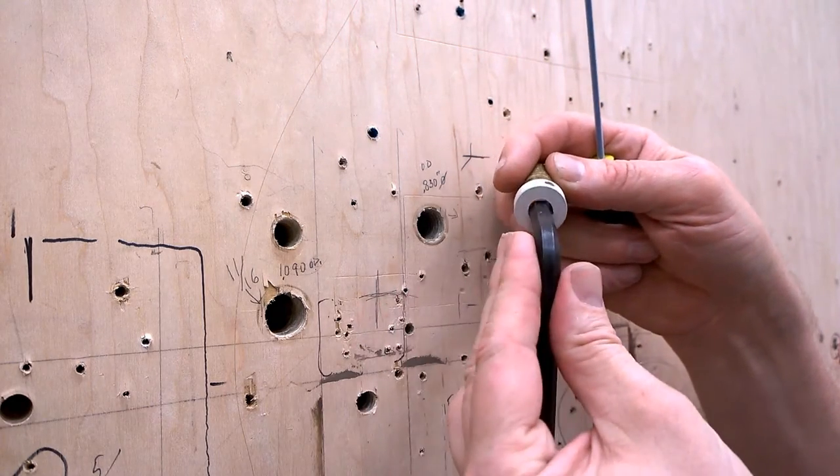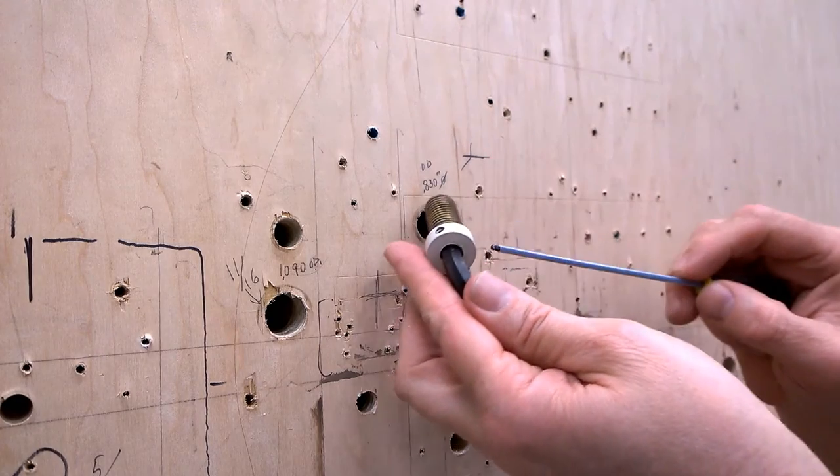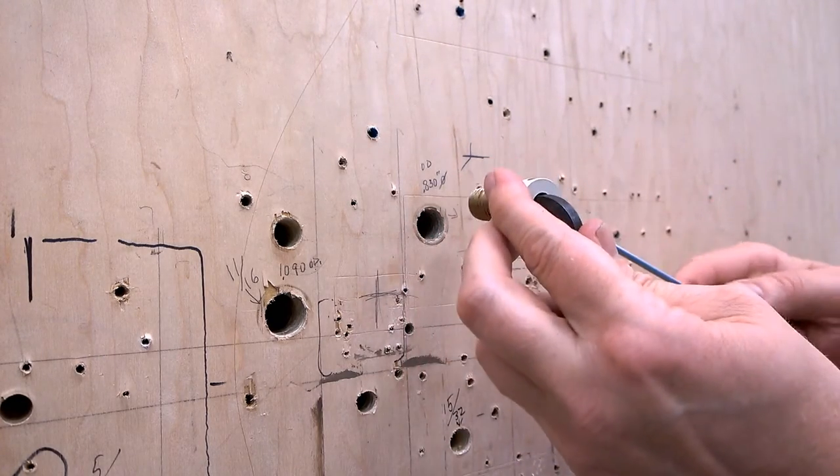To install the socket, I tighten a set screw against one of the flats on a hex head wrench and use it as an installation tool. The socket is screwed into a pre-drilled hole.